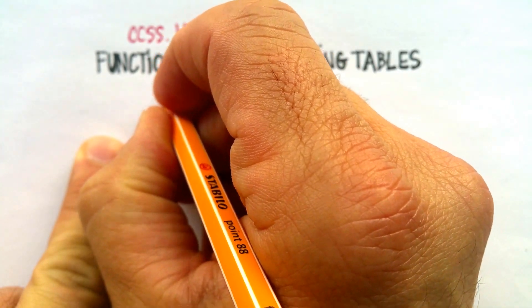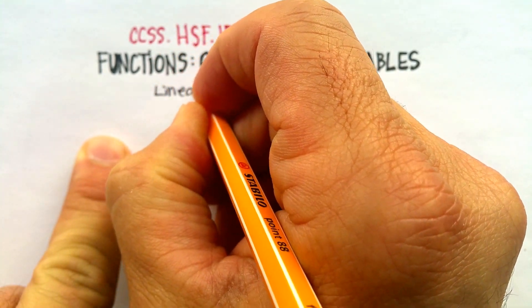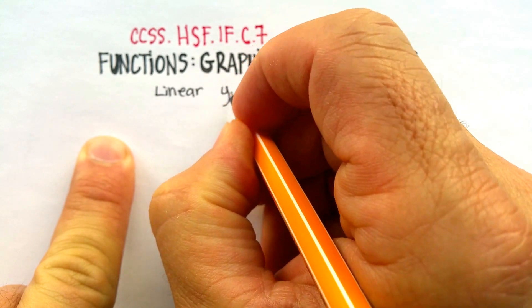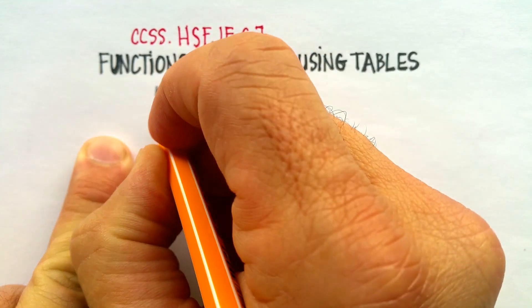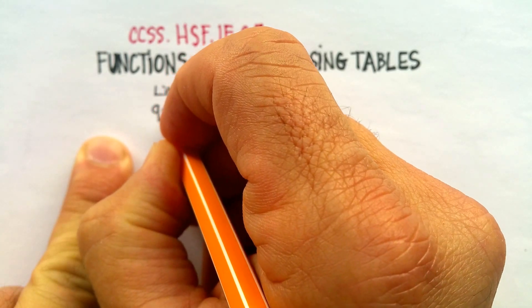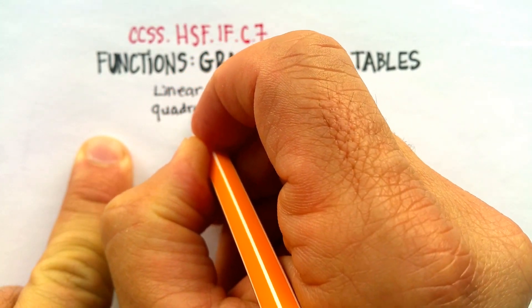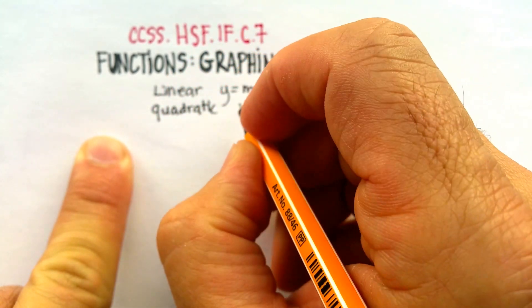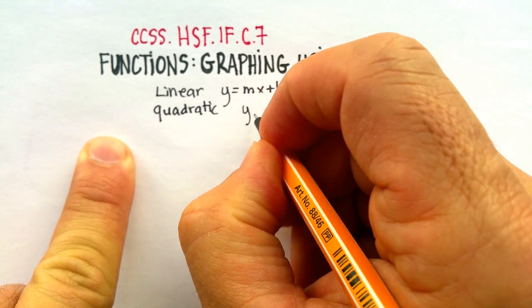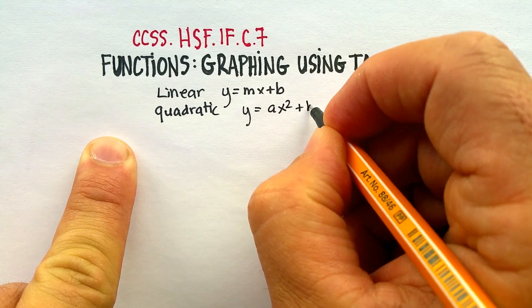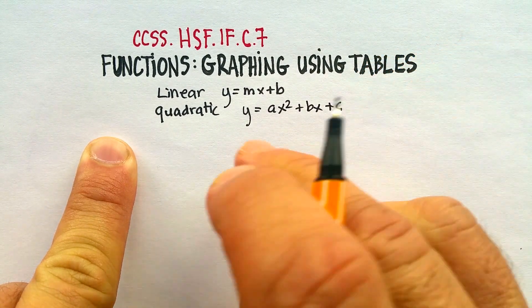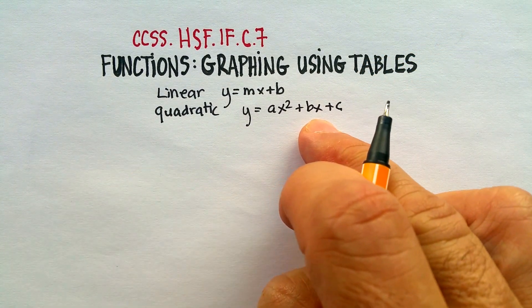We're going to do linear equations, which you're all pretty familiar with, mostly in the form of y is equal to mx plus b. And we're also going to graph quadratic equations. Quadratic equations follow this form, y is equal to ax squared plus bx plus c. And we'll talk a little bit more about that here in just a little bit.